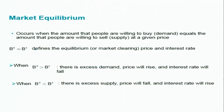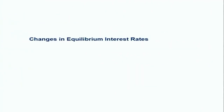This is what we discussed about market equilibrium and movement along the supply and demand curves. But there can be other factors. When we defined demand for bonds and supply of bonds we said other things remaining constant — so what are those other things? Now we are going to discuss changes in equilibrium interest rates due to other factors in the market.